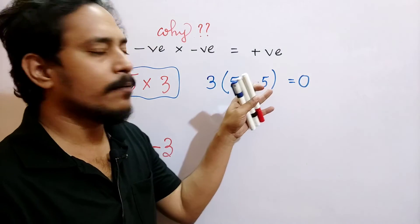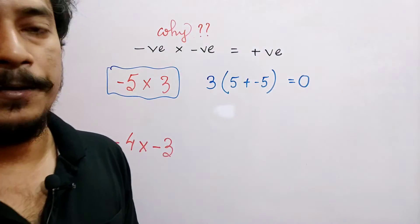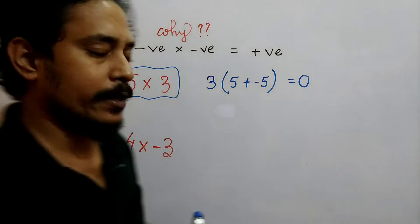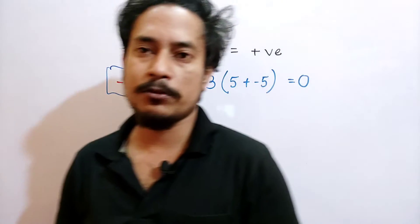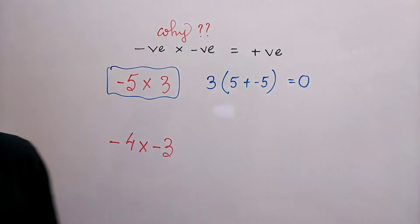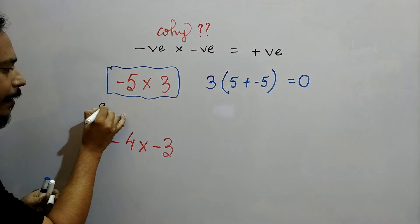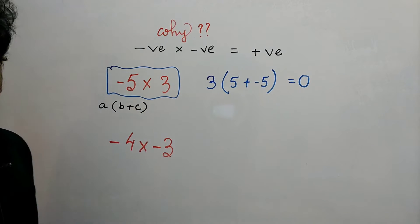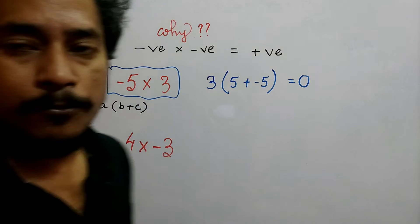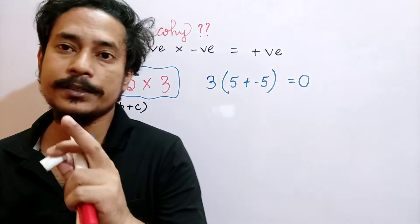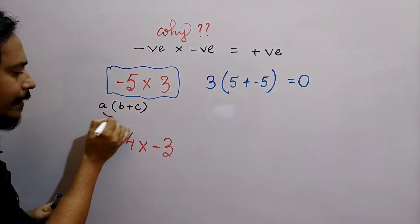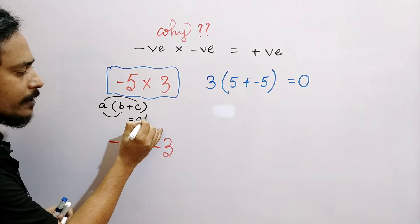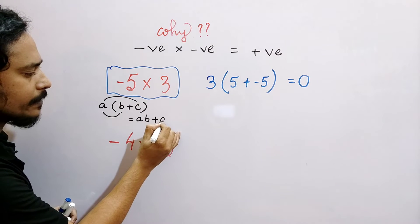Now we'll use a property, the distributive property. What is it? a into b plus c, where we can use the property. The distributive property: a is multiplied with b and a is multiplied with c. So the result is ab plus ac.